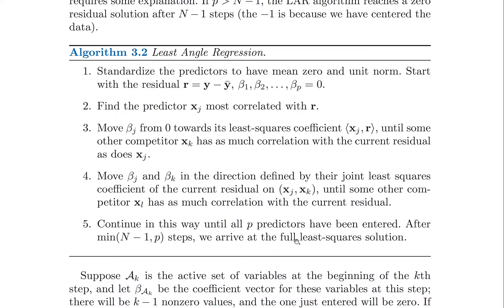So why does this make sense? Why don't we use the entire least squares fit for the first best variable xj and the best fit for xj and xk together in the second step? Why do we keep only moving them a certain amount until a new variable becomes important?